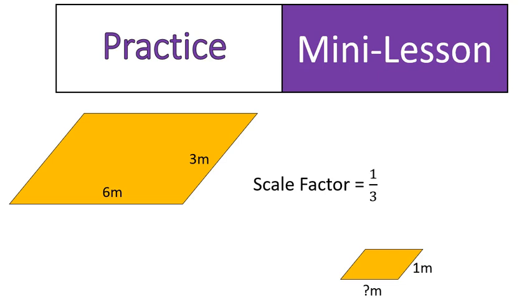Alright, you're back. So I assume you did the work of multiplying 6 times 1 third, or the measurement of the base of that parallelogram times the scale factor, and that should give you 2. In other words, 2 meters, that is the base of the new parallelogram. Nice job if you got it. If you didn't get it, hopefully that explanation has helped so that you can get that for the next one.